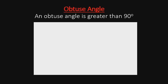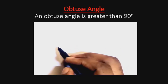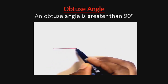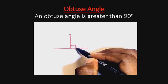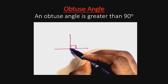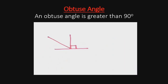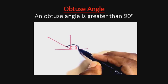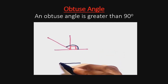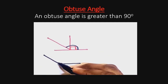The next angle we are looking at is an obtuse angle. An obtuse angle is an angle greater than 90 degrees. If we have our right angle as a reference, an obtuse angle extends beyond the right angle, covering that region, and can be redrawn accordingly.